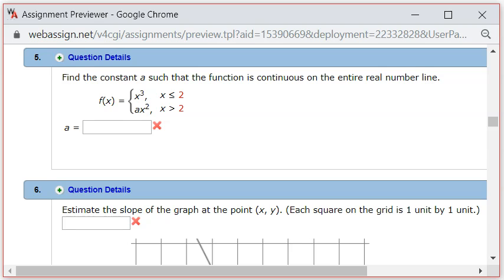Let's look at homework 1.6, 2.1, problem number 5. We have a piecewise defined function f of x, and what we want to do is pick the right number for a so that this piecewise defined function is continuous everywhere.